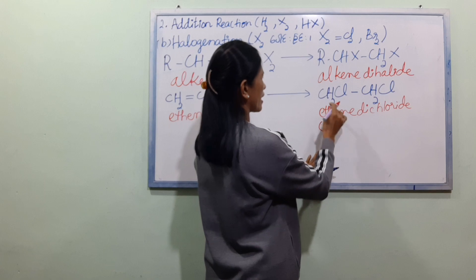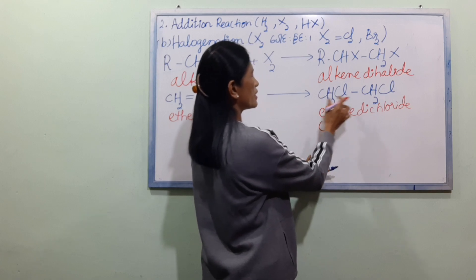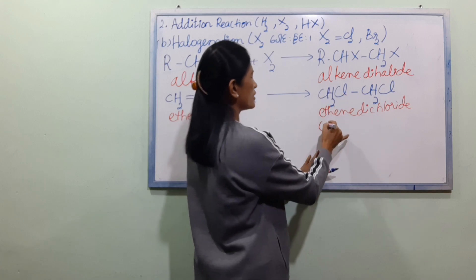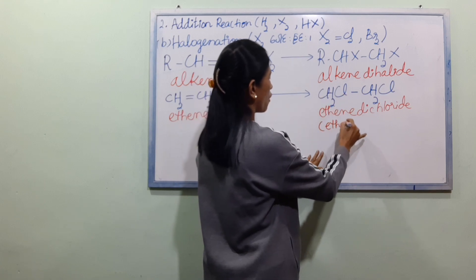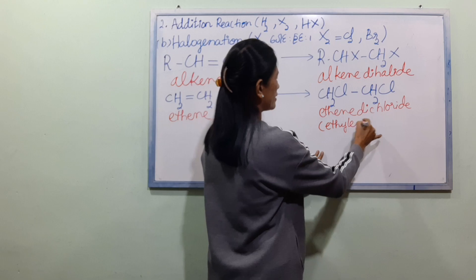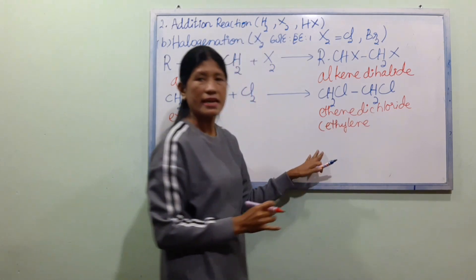The CH2=CH2 of the ethylene is named ethylene in the trivial system.